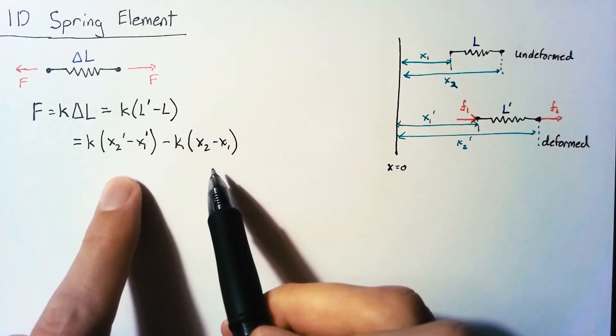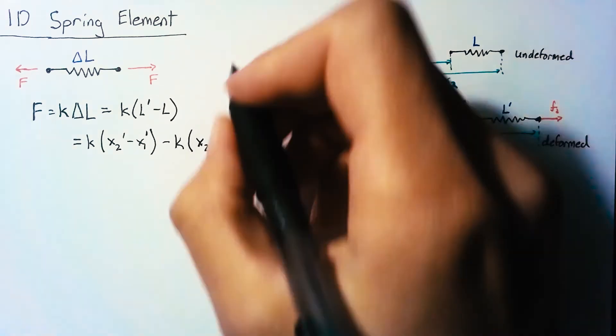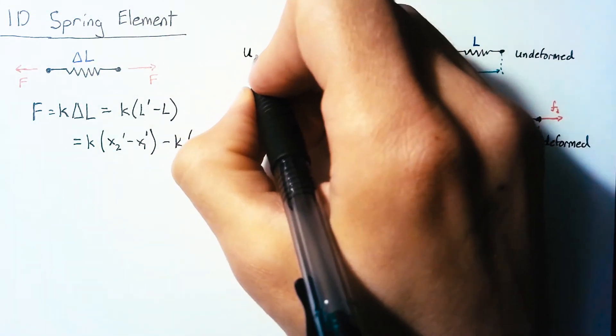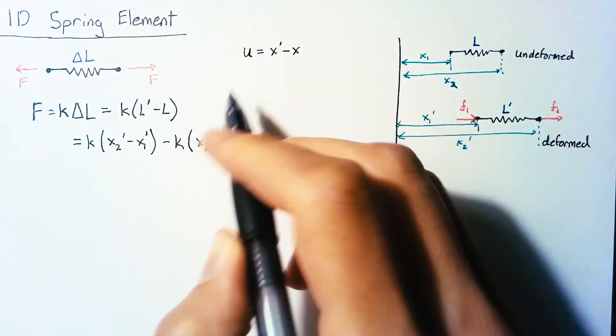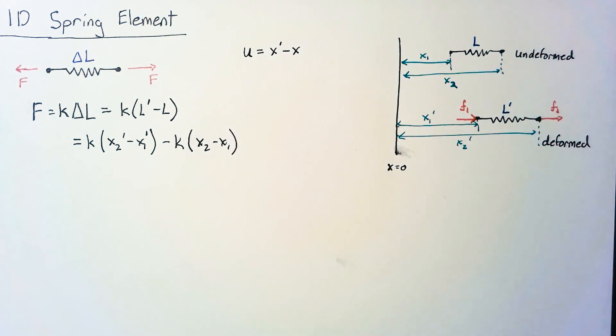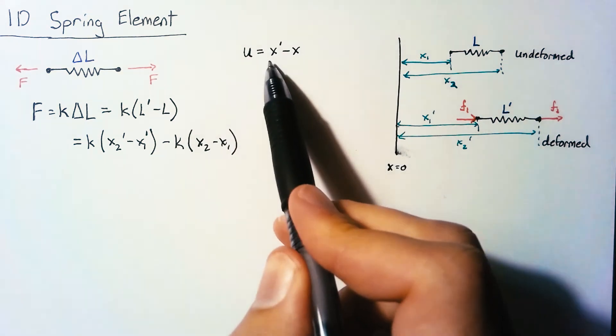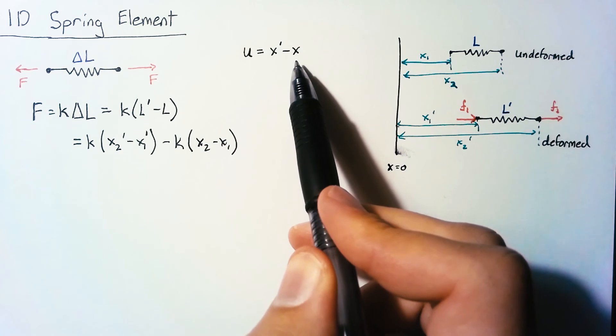Now I'm going to rearrange these because I'm interested in something called the nodal displacement. u is going to be x prime minus x and we can put any of the subscripts there but the basic idea is that the displacement is simply the deformed position minus the original position.